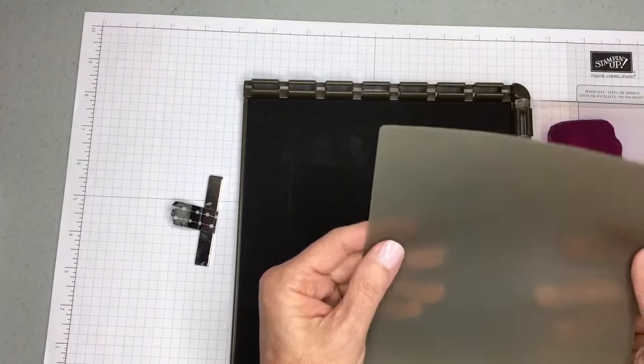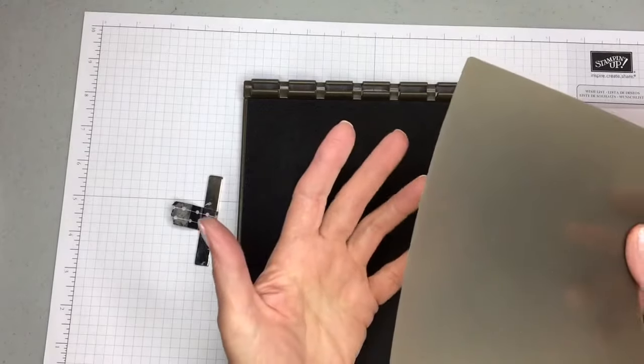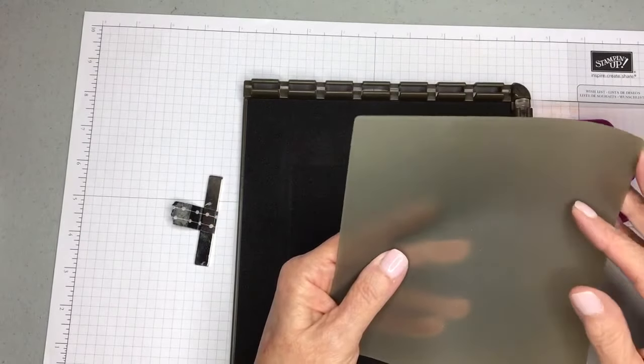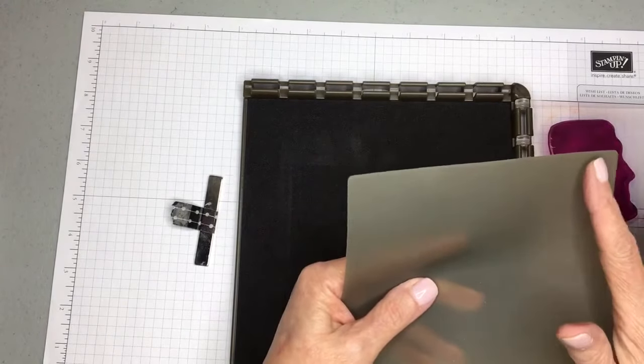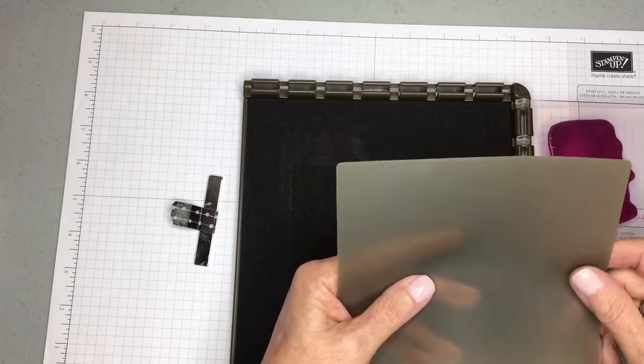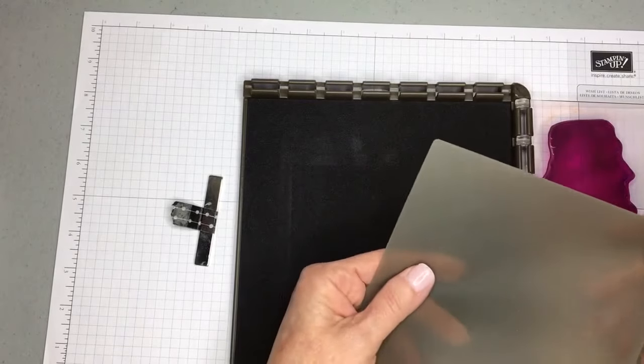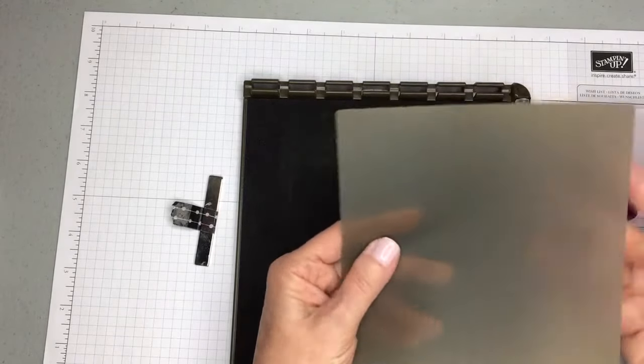This is a silicone mat, and you may already have one. I like to use it when I'm working with embossing paste, or if I want to squeeze out some glue and just dip embellishments in it, then you can rinse this off or wipe it off, and you're ready to go.